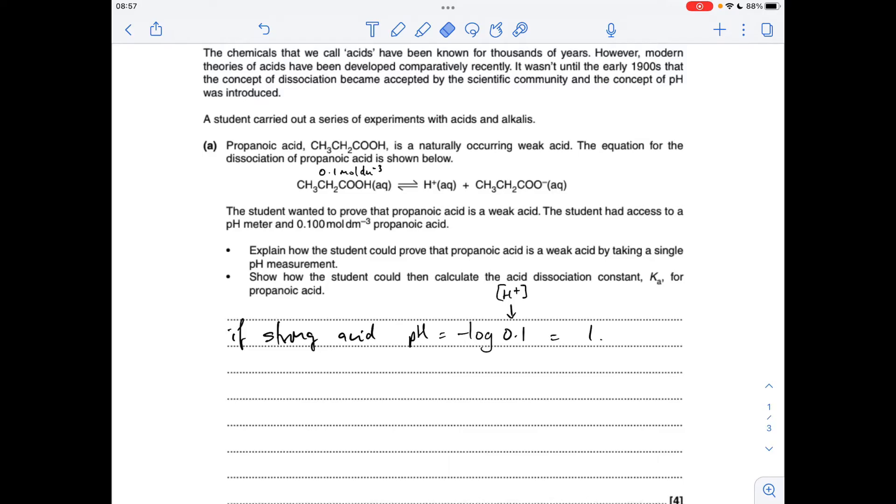OK, so part A, first bullet point, explain how the student could prove that the propanoic acid is weak by taking a single pH measurement. So I've already started the answer, I'll just explain this a little bit. If we think about propanoic acid's concentration at the start, there is 0.1 moles per decimetre cubed. If this was a strong acid, it would be fully dissociated, and so the concentration of H+ would also be 0.1 moles per decimetre cubed. Therefore the pH would be minus log of 0.1, so it would have a pH of 1.